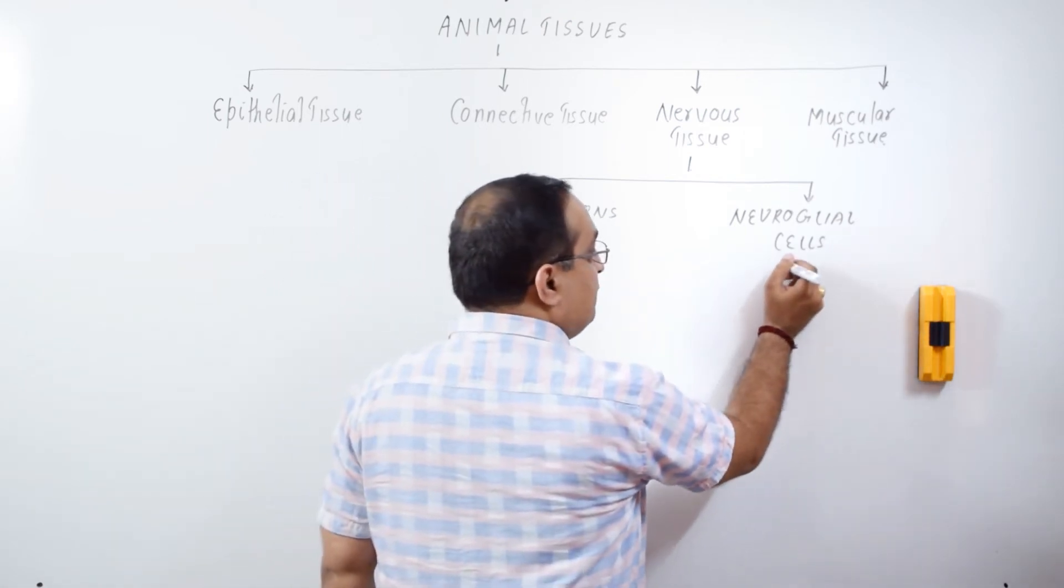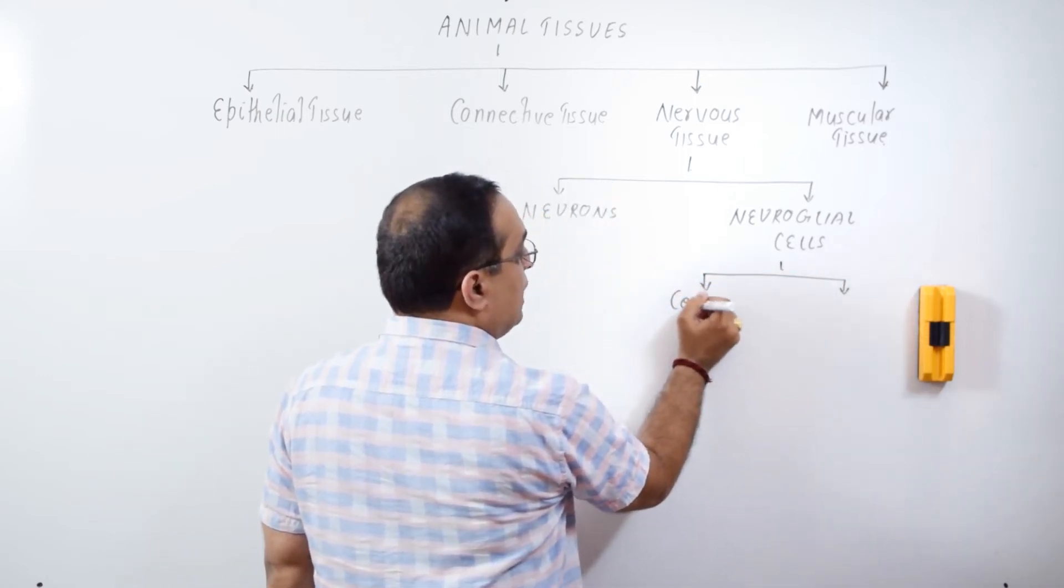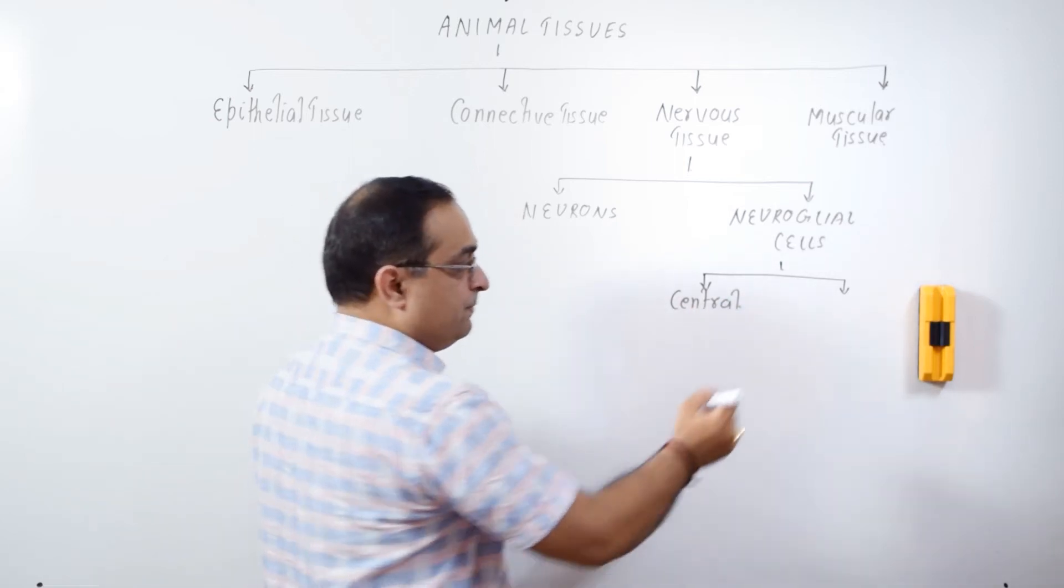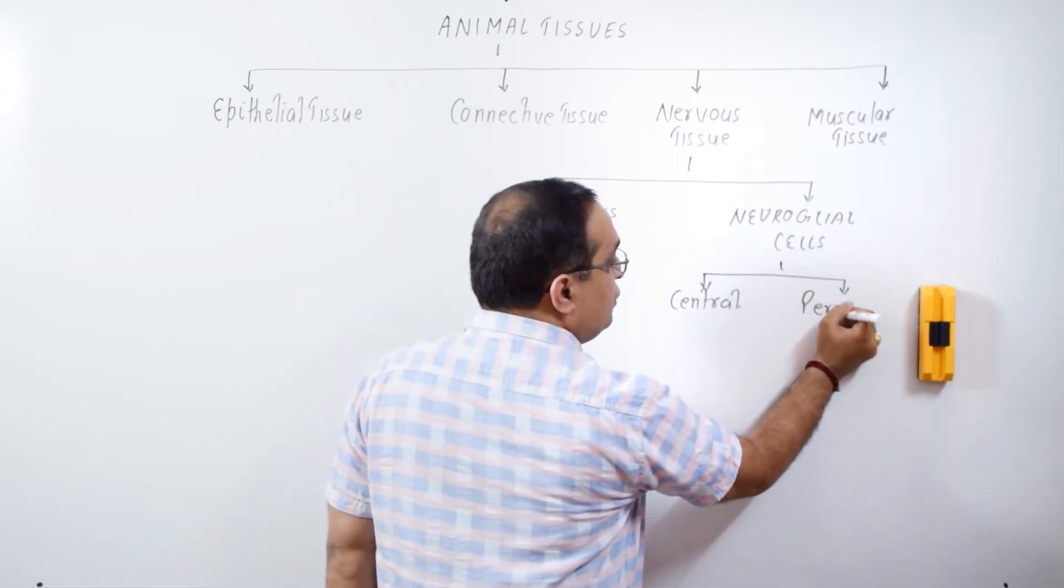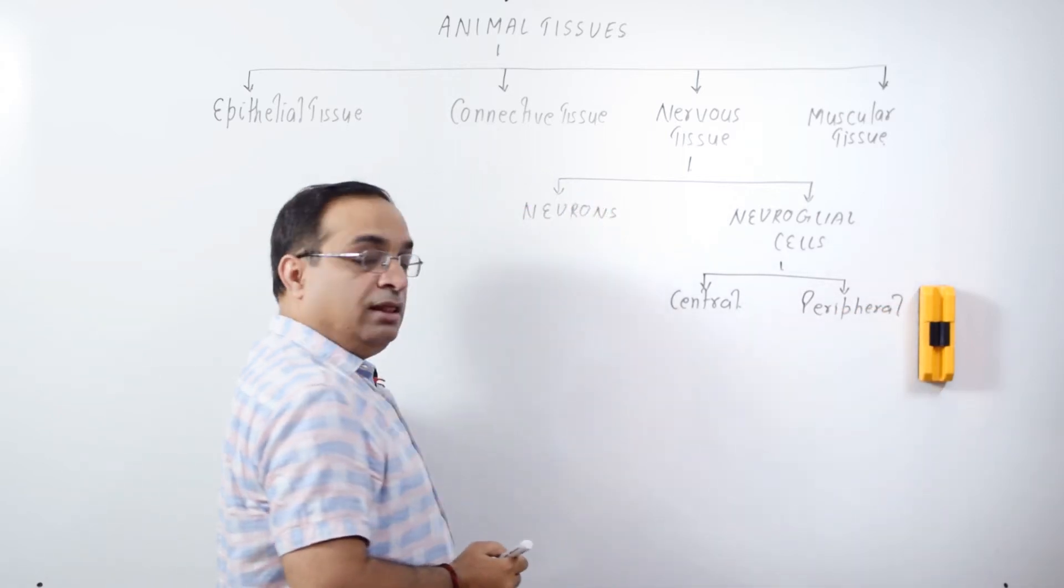So, I am classifying Neuroglial cells as Central Neuroglial cells which are present in the Central Nervous System and Peripheral Neuroglial cells which are present in the Peripheral Nervous System.